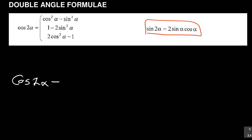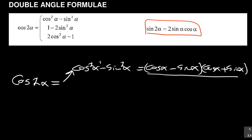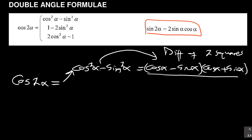The one that is sometimes tricky and elusive to students — and which examiners like a lot — is cos 2α. Now, cos 2α has got three parts. The first one is cos²α minus sin²α. You must also be aware that you can further write this as a difference of two squares: (cos α − sin α)(cos α + sin α). Remember, they can bring it like that — it's hidden sometimes in a question.